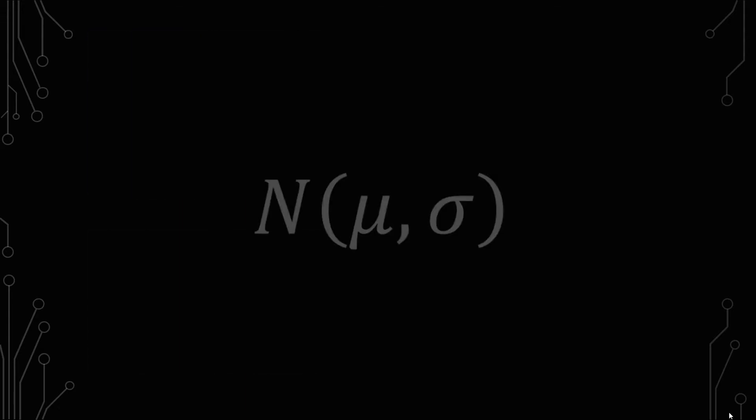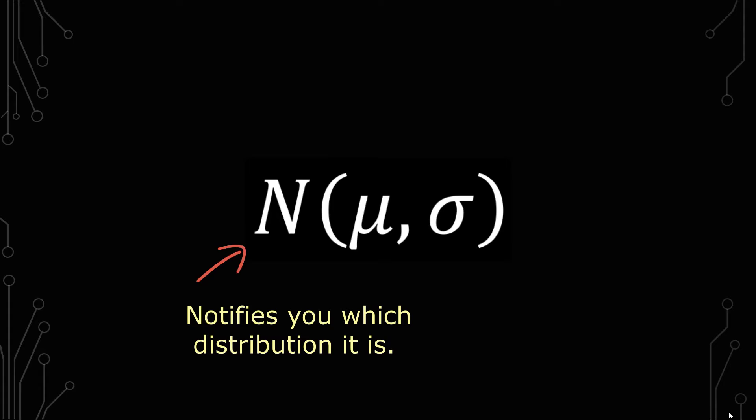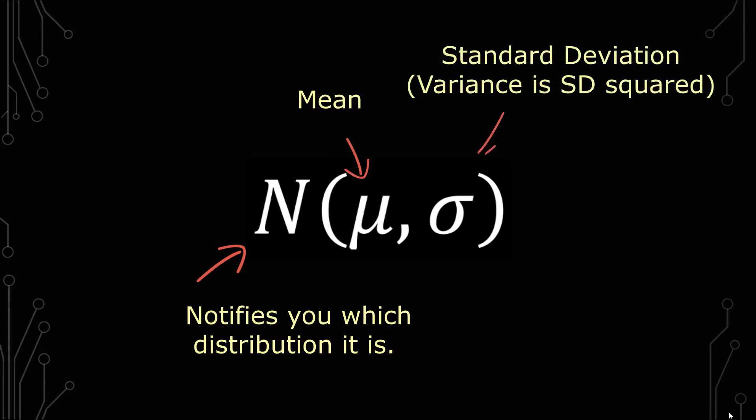The notation for the normal distribution is this, where you have the normal being represented by N, and then you have the mean as mu, and then you have the standard deviation or the variance as sigma and sigma squared. Depending on where you're at, you'll see one or the other or maybe even both.